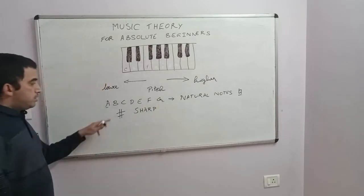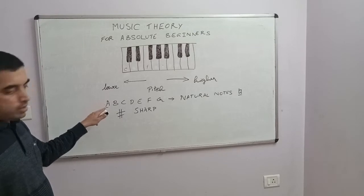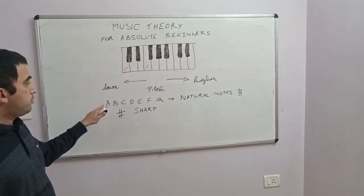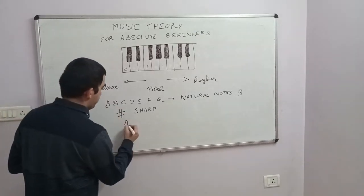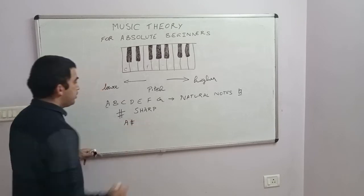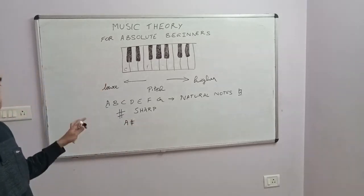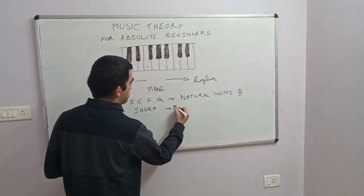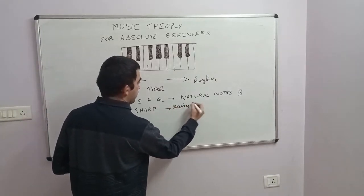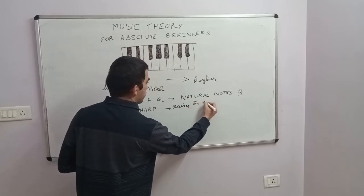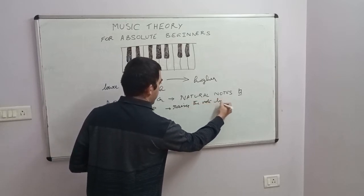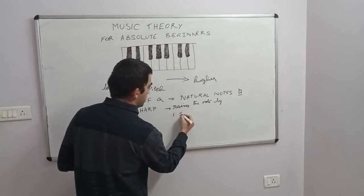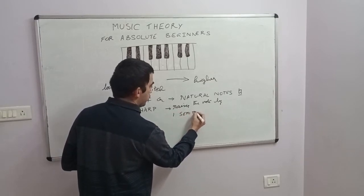This symbol comes in front of every note. For example, you can have an A sharp, you can have a B sharp. What is the meaning of a sharp? The sharp basically raises the note by one semitone.